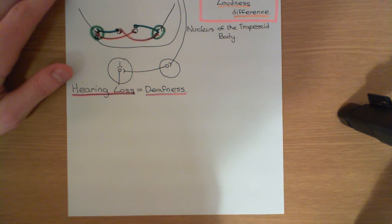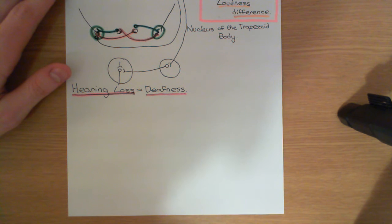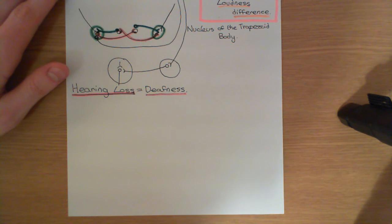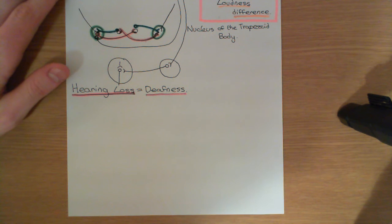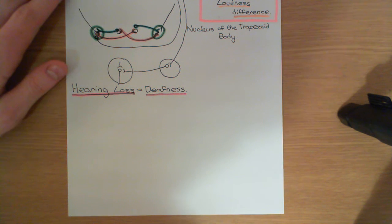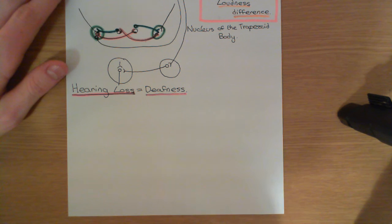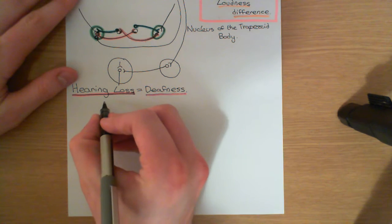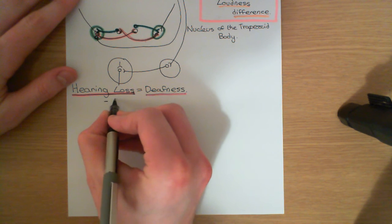I'd like to end this video on the auditory system by saying a little bit about hearing loss, which is also known as deafness. I'm going to talk about the forms of hearing loss which result because of problems with the function of the ear, rather than because of problems with the central auditory pathways. The forms of hearing loss that result from a problem with the ear can be split into two different forms.